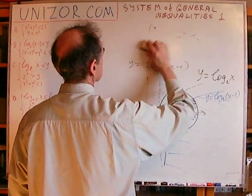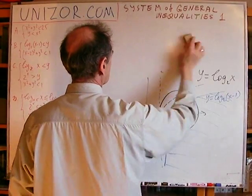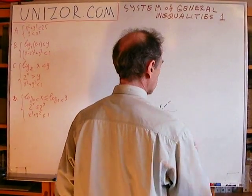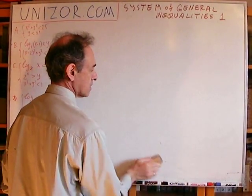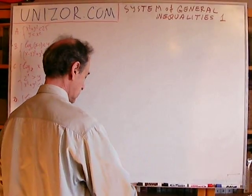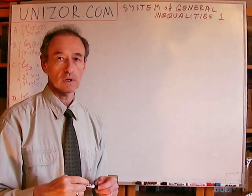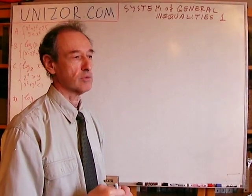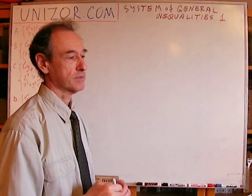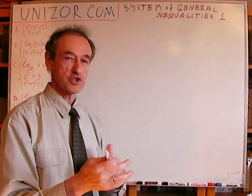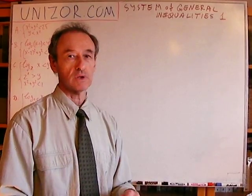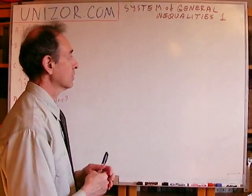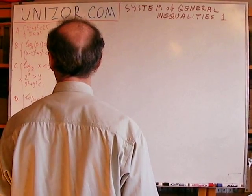As you can see, all these problems are about drawing the corresponding graph of the equation of two variables, and then determining which part of the plane belongs to the inequality in question. Finally, you intersect all these areas.